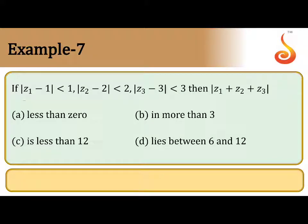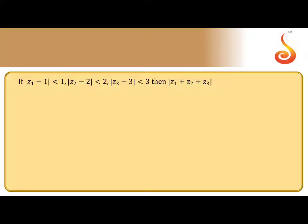If modulus of z1 minus 1 less than 1, modulus of z2 minus 2 less than 2, modulus of z3 minus 3 less than 3, then the modulus of z1 plus z2 plus z3 is: less than zero, more than 3, less than 12, or lies between 6 and 12. You have to calculate this value.